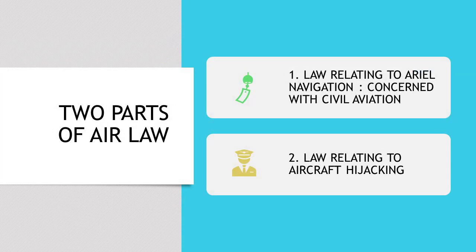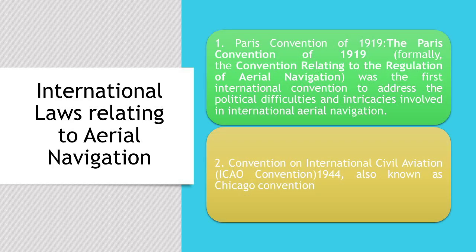To study air law, we have to study it in two parts. The first part is law relating to aerial navigation, which directly deals with civil aviation, and the other is law relating to aircraft hijacking. The first major law is the Paris Convention of 1919, considered to be the first basic law dealing with international aerial navigation.